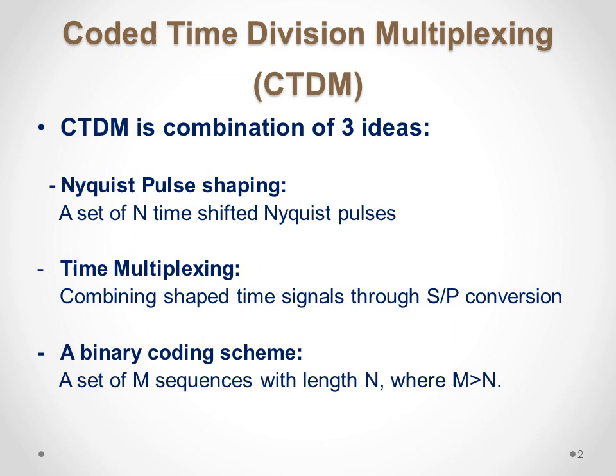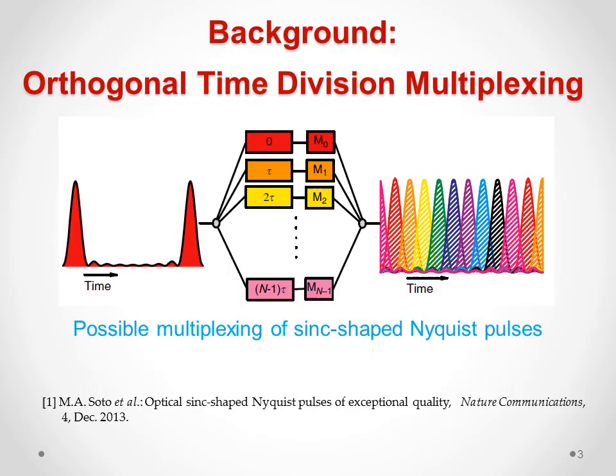For the coding part, I use a set of sequences whose lengths are less than the number of those sequences, and for the pulse shaping part I use a set of time-shifted Nyquist pulses.